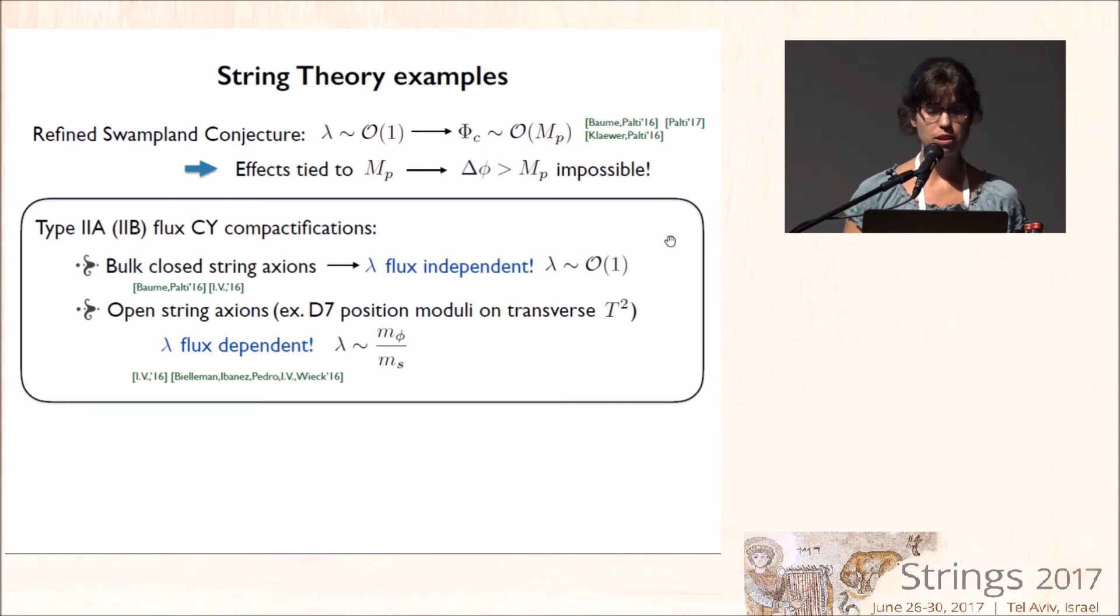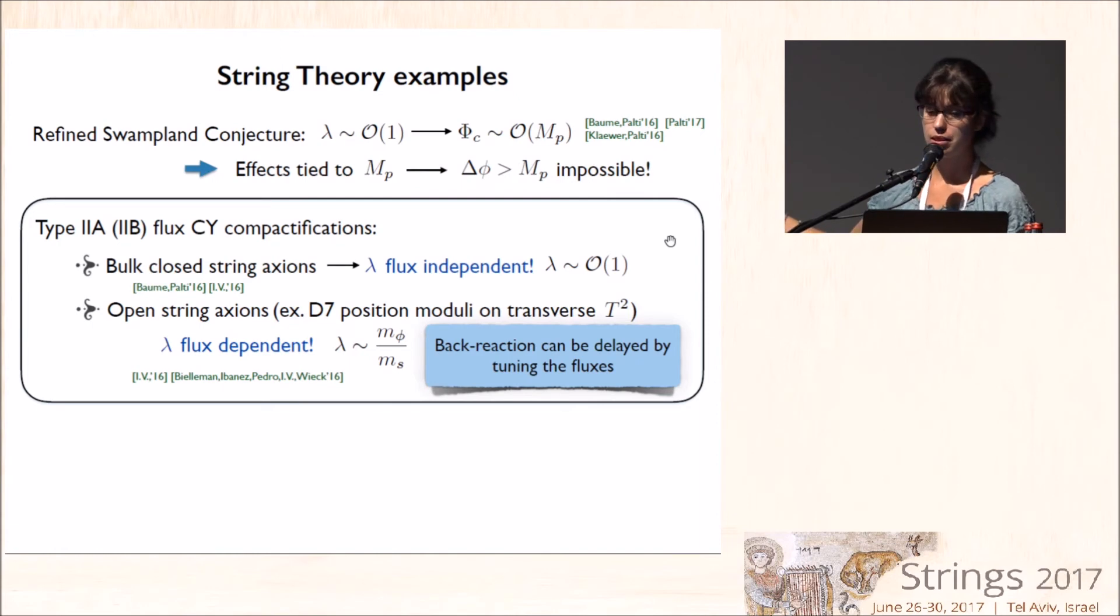Now, we also saw that this is not the end of the study, because if we introduce, for instance, open string fields, lambda becomes flux dependent, because indeed it depends on the hierarchy, the mass hierarchy between the inflaton and the saxions. So if we are able to generate this hierarchy, in principle, we can delay the back reaction effects by tuning these fluxes, by generating the hierarchy far away in field distance.